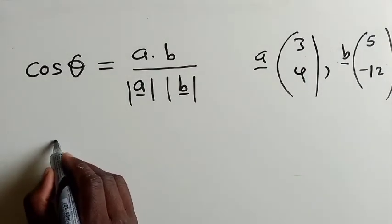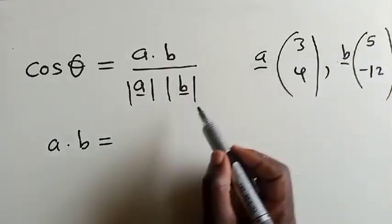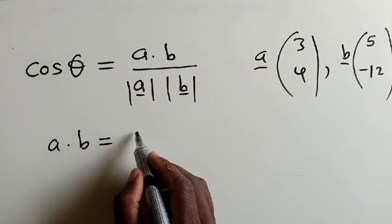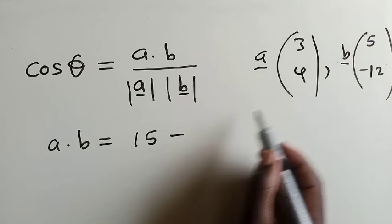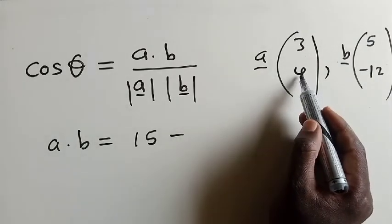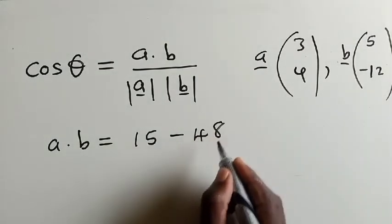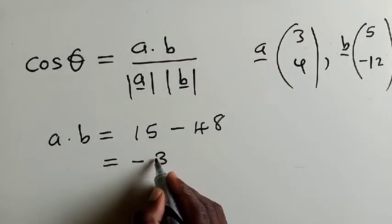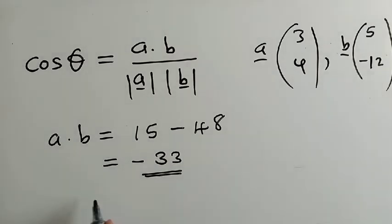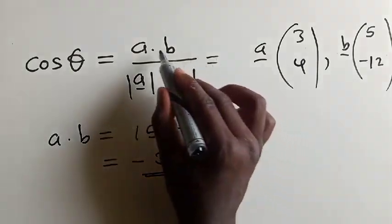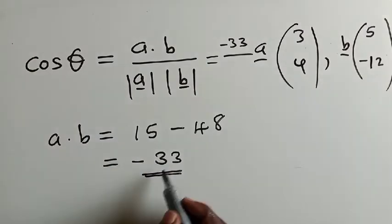So now we can find our dot product by simply multiplying this. So it will be 3 times 5, which is equal to 15, minus, or plus, since there is a negative here, it will just be minus, 4 times 12. So what is 4 times 12? It's 48. And we'll work out, we'll find that our dot product is negative 33 right here. So here, what we need to put on top is negative 33. We've just calculated negative 33.